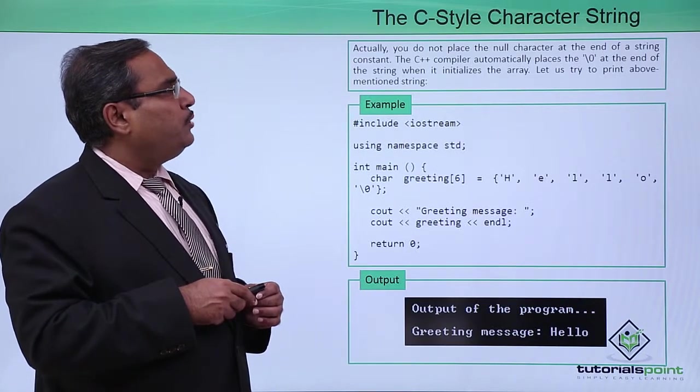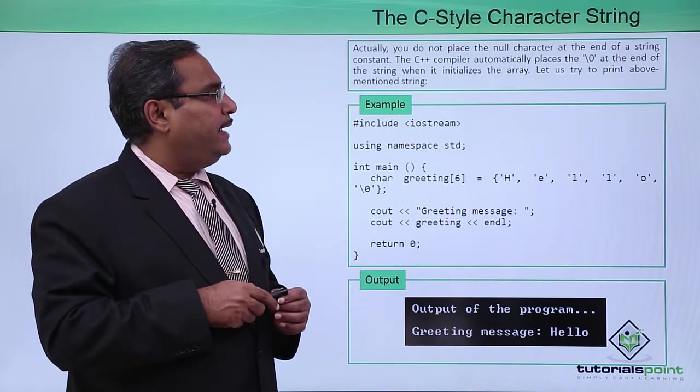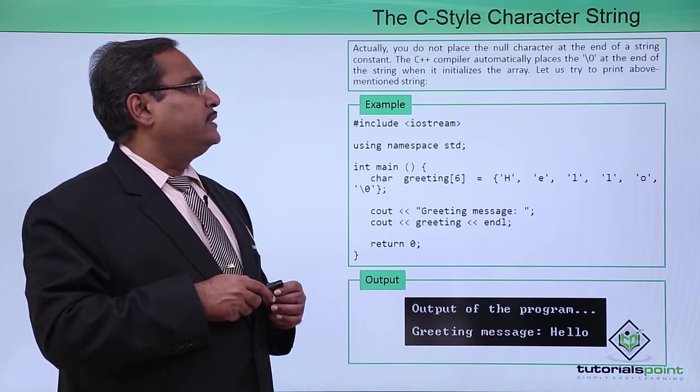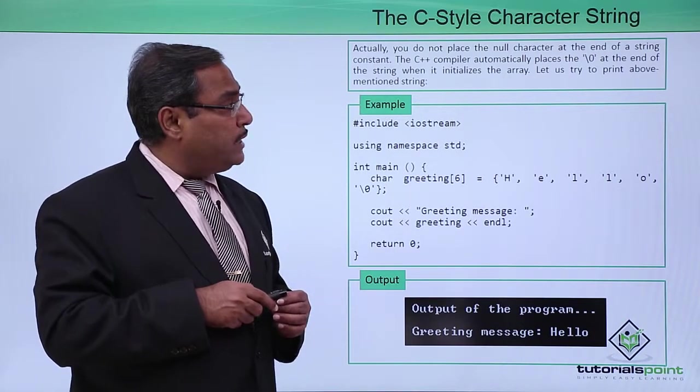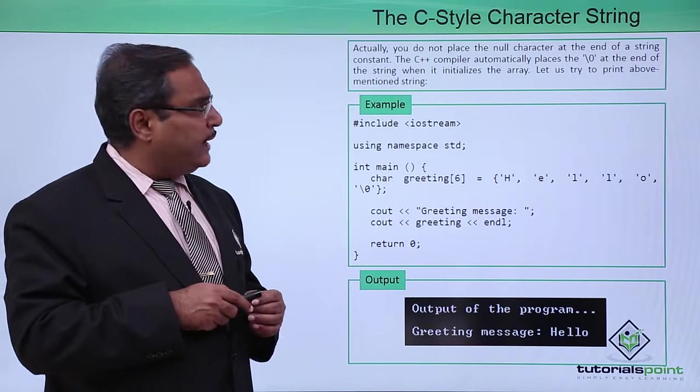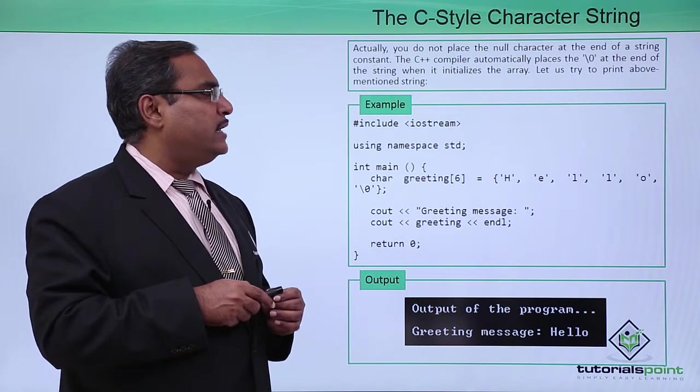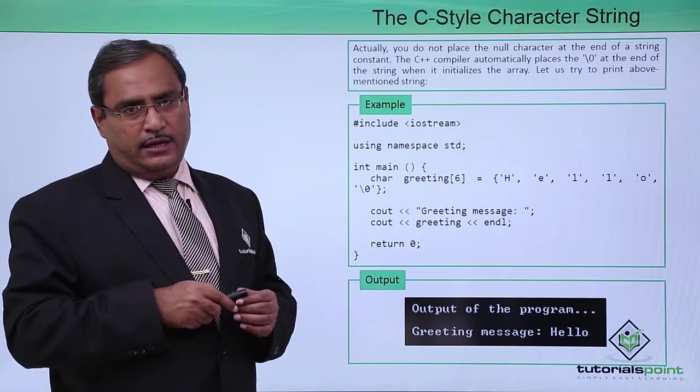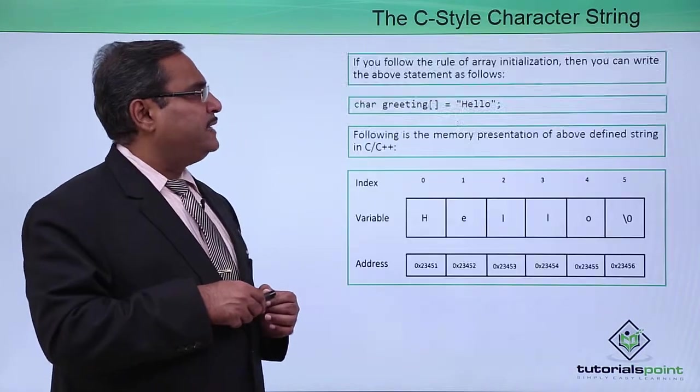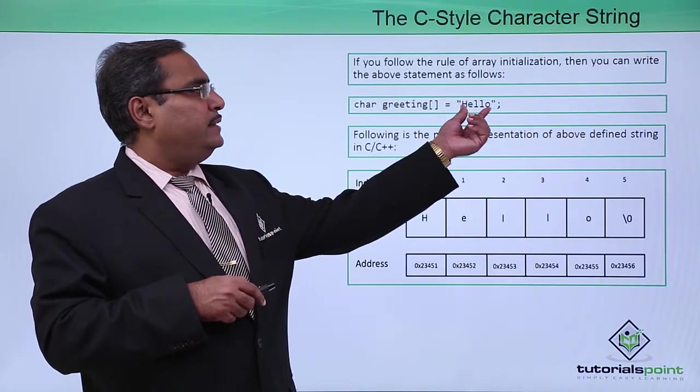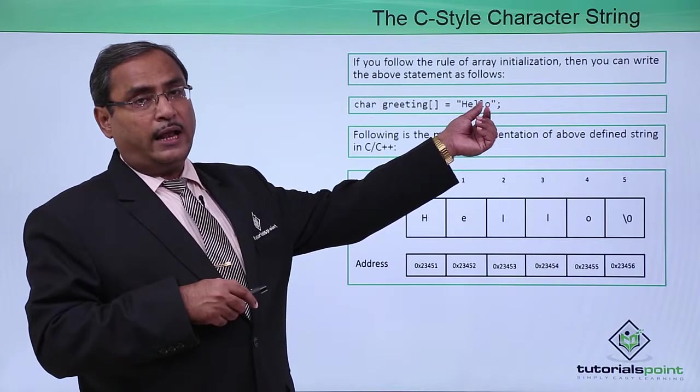Actually, we do not place the null character at the end of a string constant. The C++ compiler automatically places the null character at the end of the string when it initializes the array. In the previous example also, you have found that here we did not put any null character.